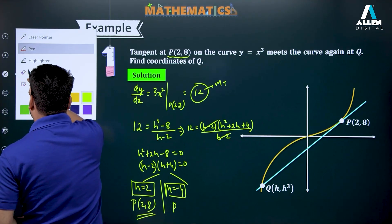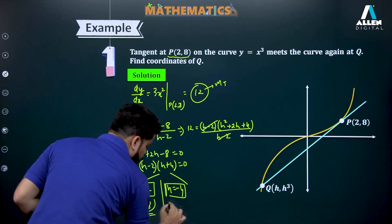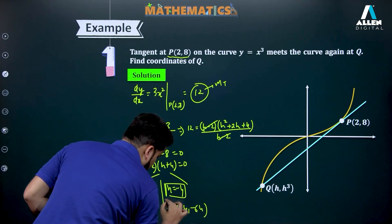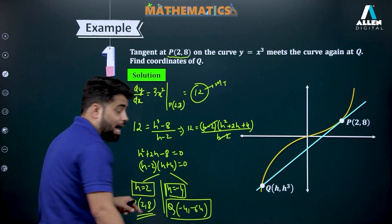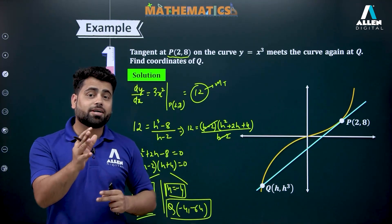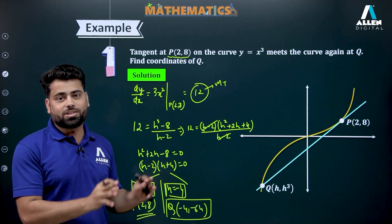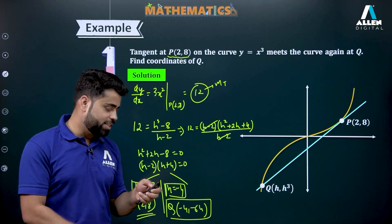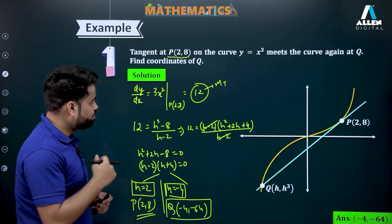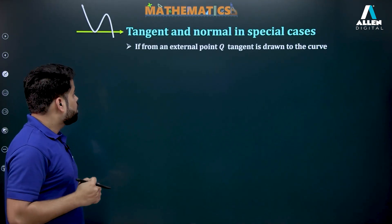The next point: if h = -4, then the coordinates of Q come out to be (-4, -64). I told you earlier — if your diagram is fair, this point lies in the third quadrant, which you can see. That is the approach you apply to solve the question and match your answer: Q = (-4, -64).